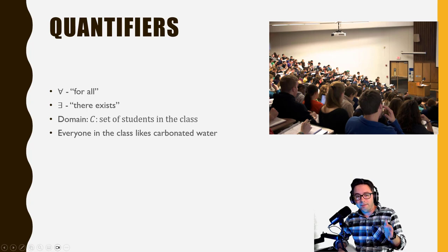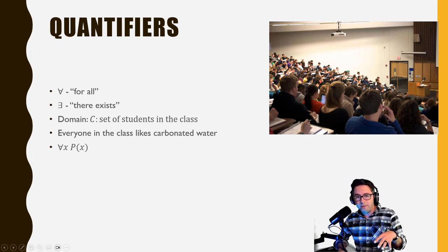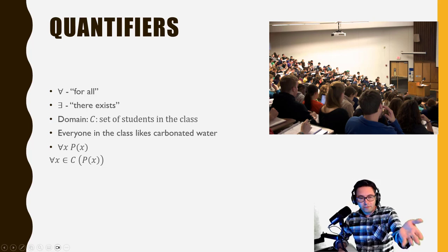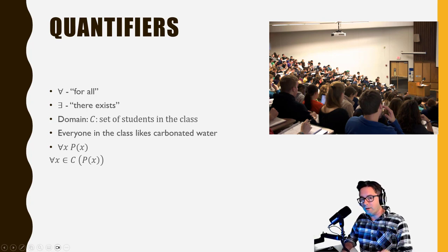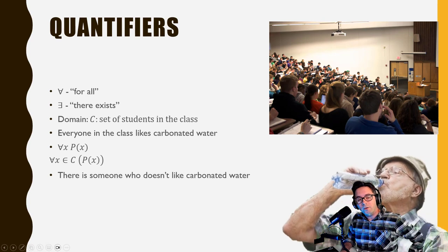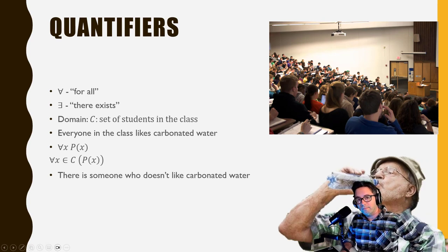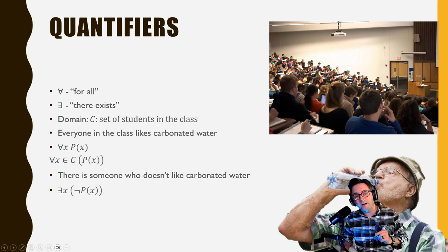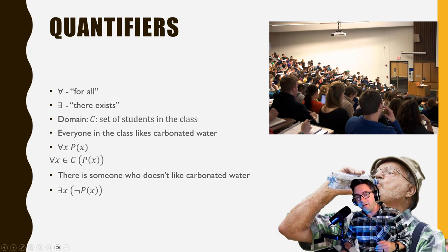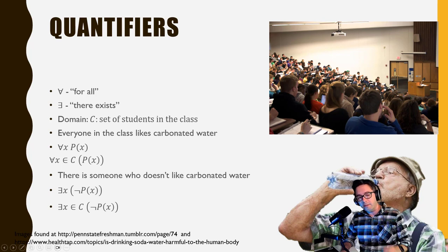For example, if I say 'everyone in the classroom likes carbonated water,' we'd translate that as: for every x, p(x) is true. The more exact way is to say x is coming from set C. Just focus on 'for every x, p(x) is true.' Likewise, 'there's somebody who doesn't like carbonated water' would be: there exists an x such that not p(x) is true. With the set included: there exists an x in C such that not p(x) is true.